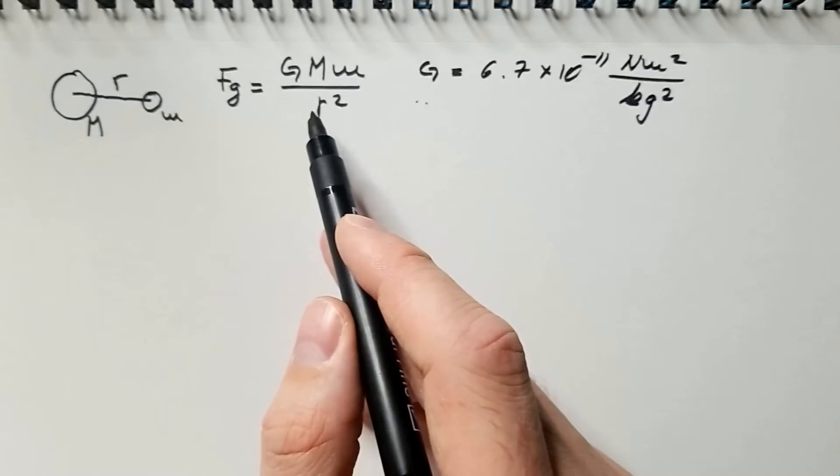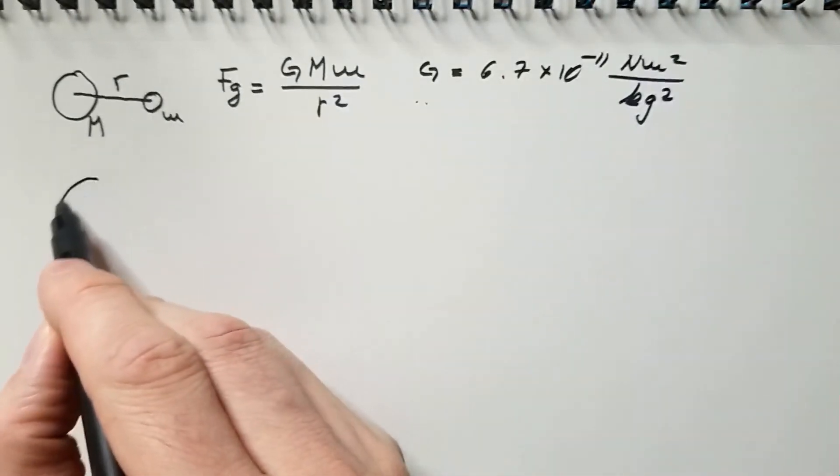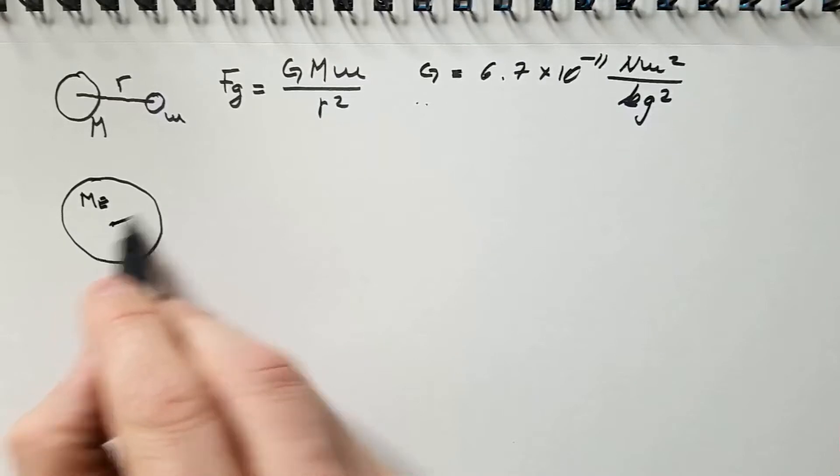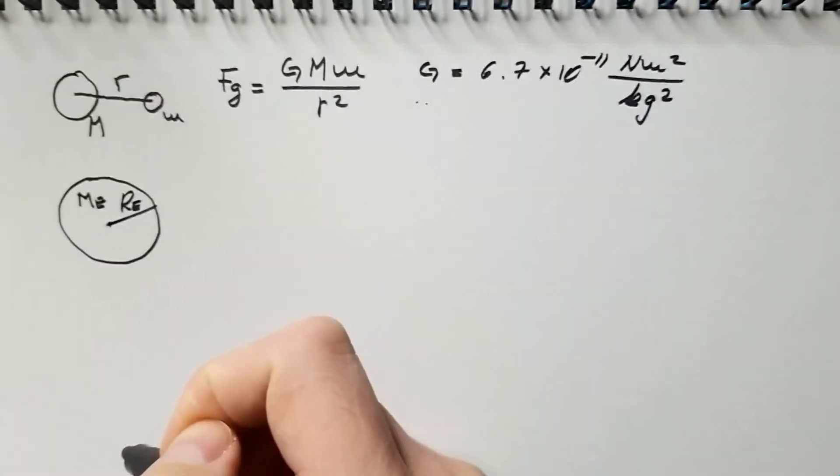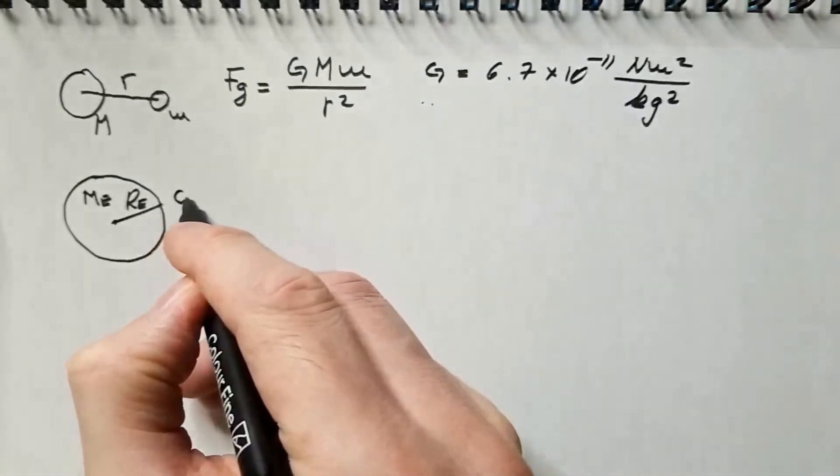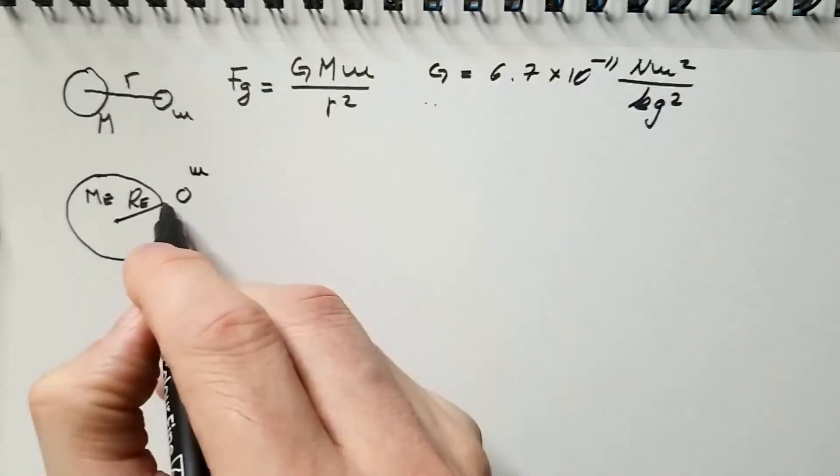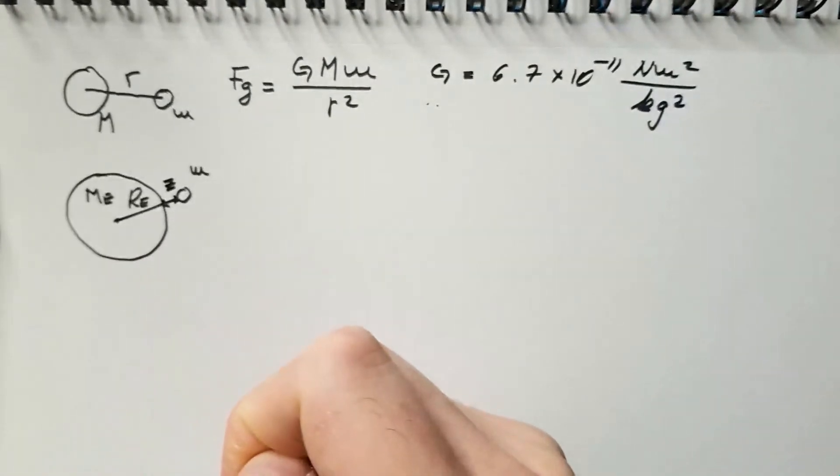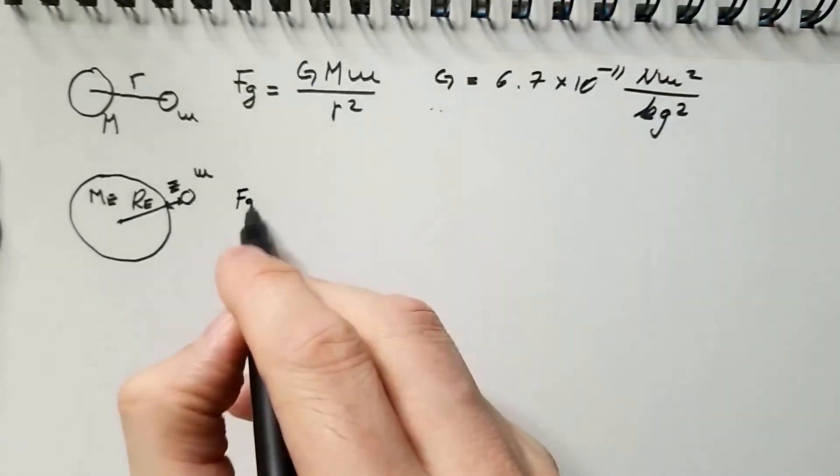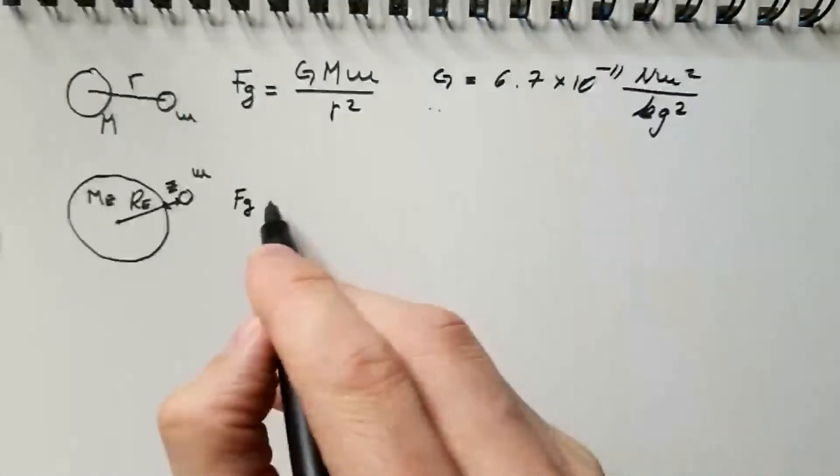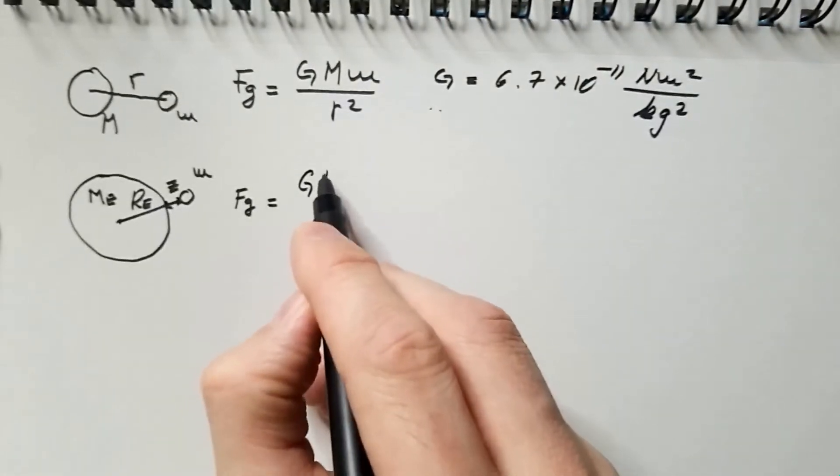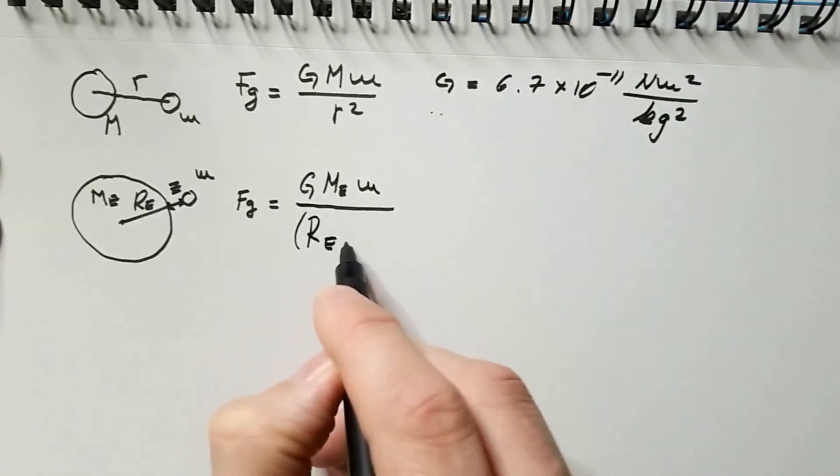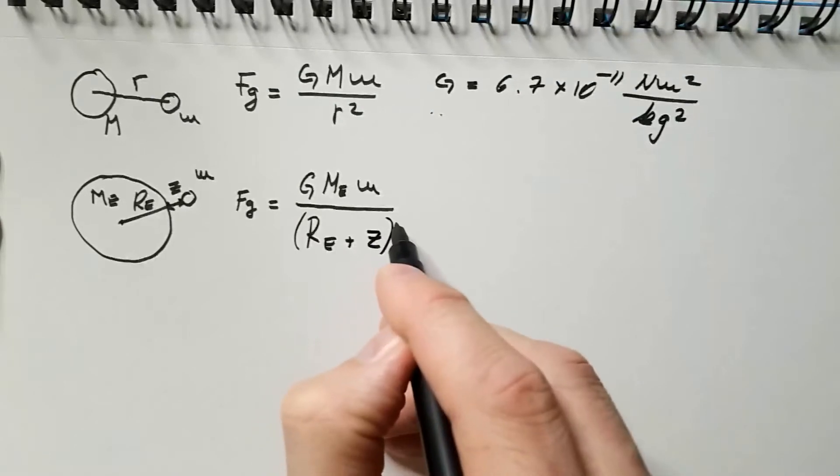Now, let's apply this great law to atmospheric sciences, where we have Earth that has mass M_e and radius R_e. And we have a parcel of air somewhere here that has mass m, and the distance from the surface of the Earth is, let's say, z. Then, the above equation says that the gravitational force equals G M_e times m, divided by radius of Earth plus the distance from the surface of the Earth squared.